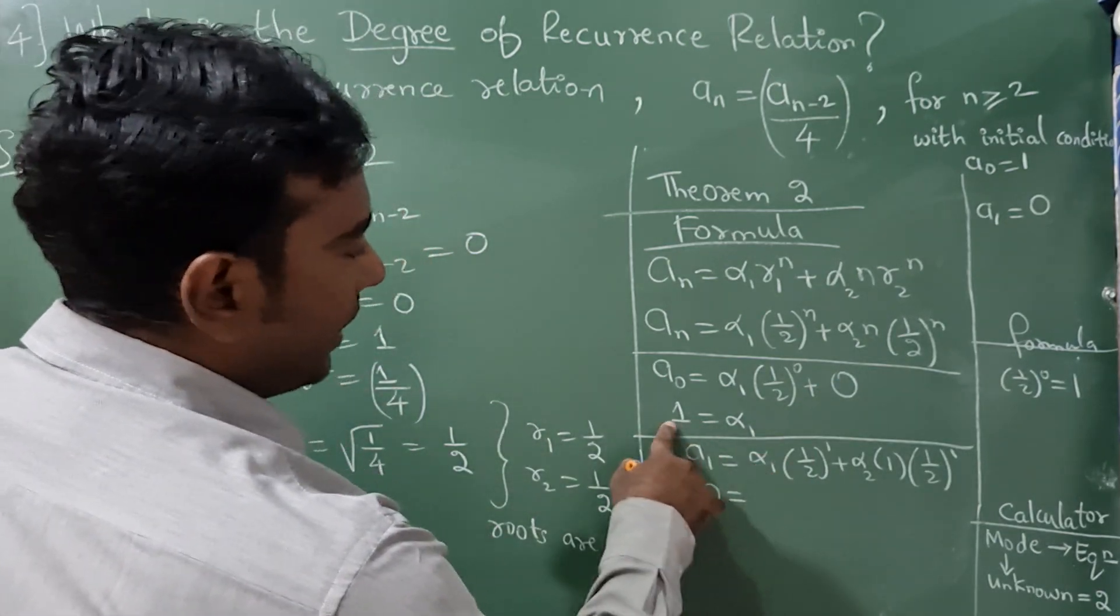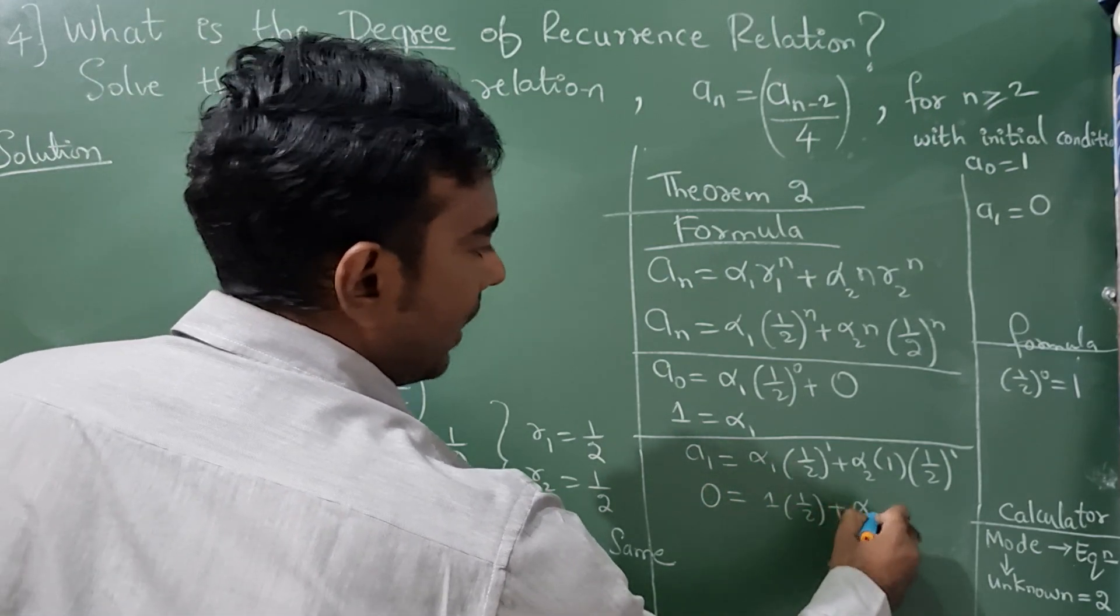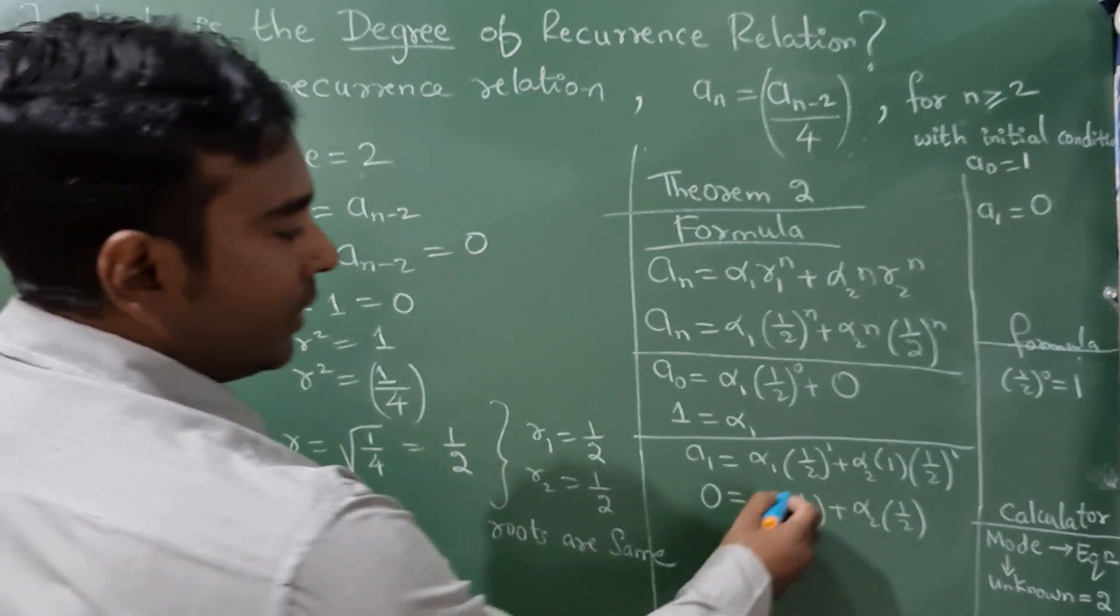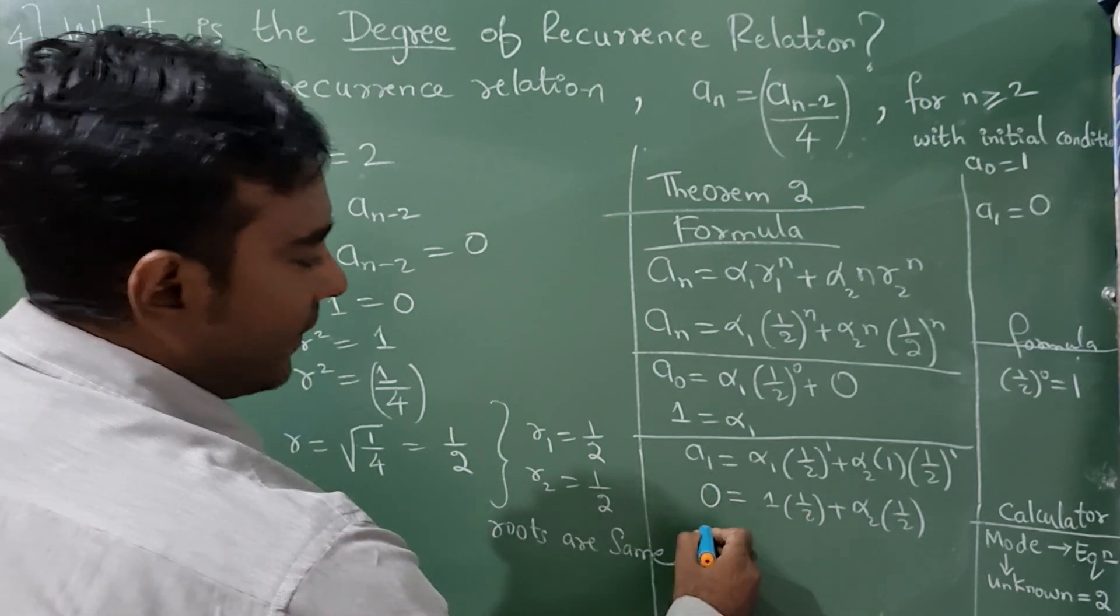Now α₁ value is 1, so 1·(1/2) + α₂(1/2) = 0. 1·(1/2) is 1/2 itself. Now take this on the left hand side.